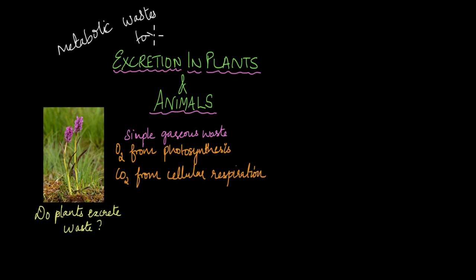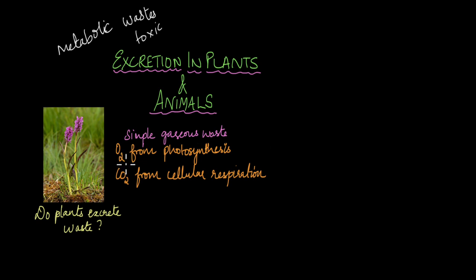These wastes are toxic to the organism and they need to be excreted out. Plants also produce metabolic wastes that need to be excreted out. How do plants excrete these wastes? We'll start with simple gaseous wastes: oxygen as a byproduct of photosynthesis, and carbon dioxide as a byproduct of cellular respiration.